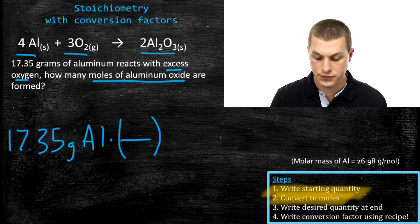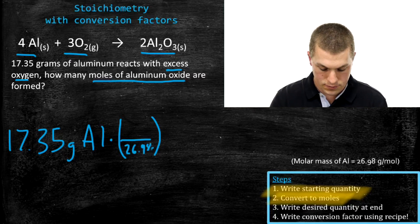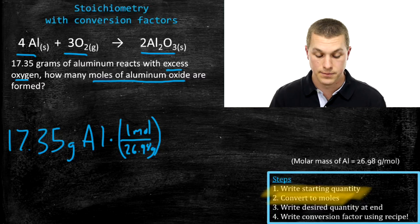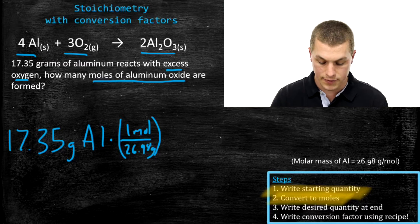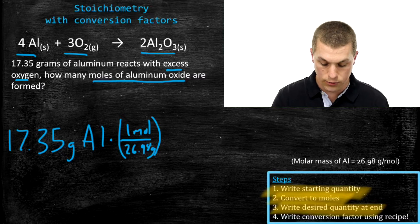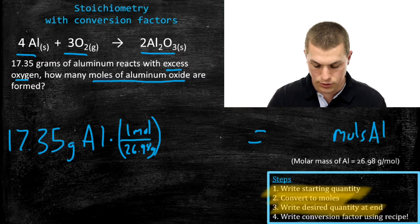The molar mass of aluminum is 26.98 grams per mole, so 26.98 grams goes on the bottom and one mole goes on top. That gives us moles of aluminum. Now we want to go to moles of aluminum oxide, so we write our desired quantity over on the right-hand side — moles of Al₂O₃ — and that helps us write our next conversion factor.